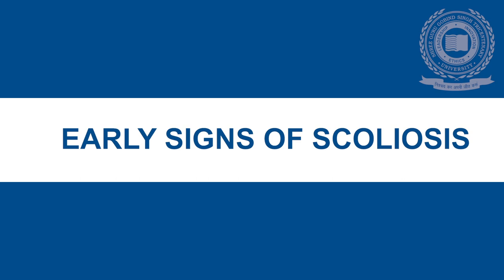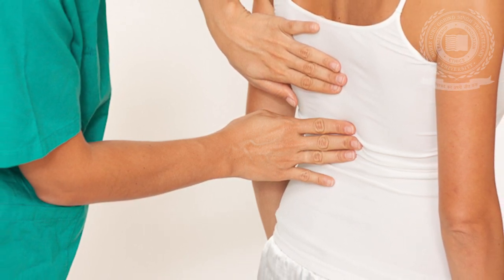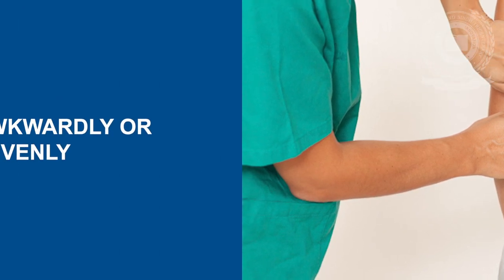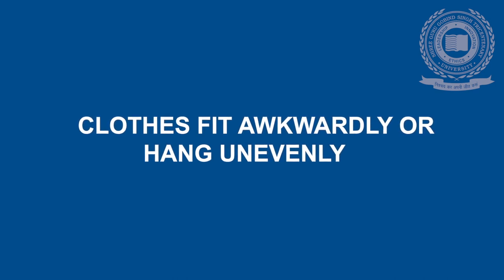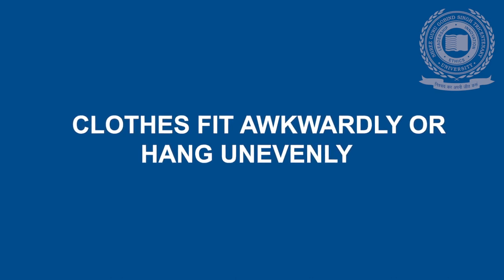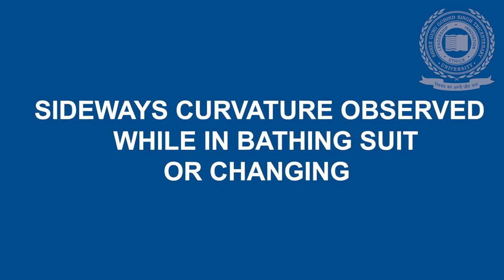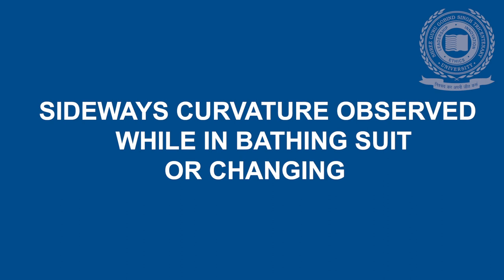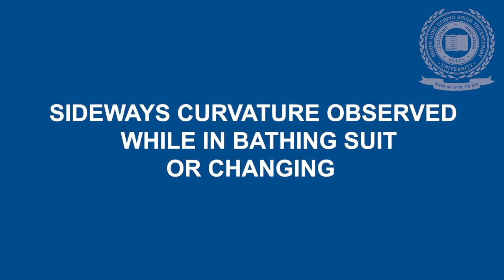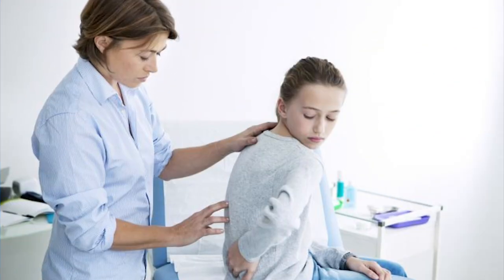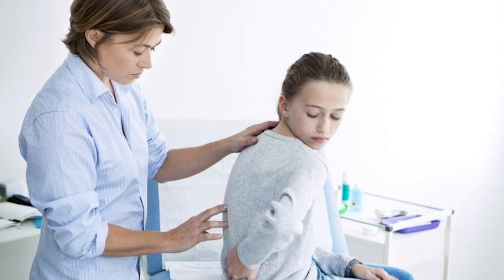Common early signs of scoliosis. Scoliosis is first suspected when someone notices something slightly off. Some examples could include clothes fitting awkwardly or hanging unevenly. A parent, friend, or even the person with scoliosis might notice that a shirt or blouse appears uneven, which could be cause for further investigation. A sideways curvature may be observed while in a bathing suit or changing — for instance, a parent could first notice it in an adolescent's back while at the pool or beach. Even if a newly discovered asymmetry appears minor, it should be checked by a doctor because scoliosis is easier to treat when caught early.